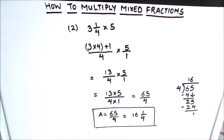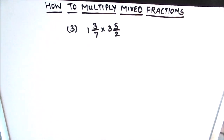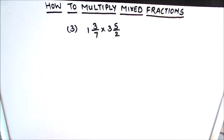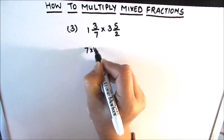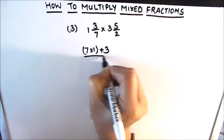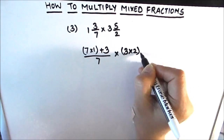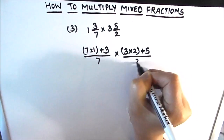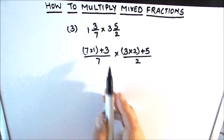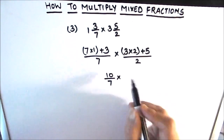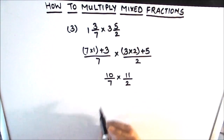Let's move on to our next example where we multiply two mixed fractions together. Our third example is 1 and 3 by 7 times 3 and 5 upon 2. Our first step is to convert these mixed fractions into improper fractions. So this is going to be 7 times 1 plus 3 divided by 7, times 3 times 2 plus 5 divided by 2. 7 times 1 is 7, 7 plus 3 is 10 — that's 10 upon 7. 3 times 2 is 6, 6 plus 5 is 11 — that's 11 upon 2.